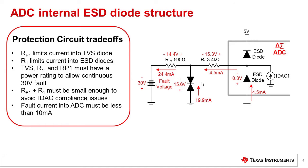In this slide, we zoom in on the key components attached to the IDAC pin to reiterate and clarify the protection circuit for the ADC. This example shows the final resistor and TVS values that we will use for this design. Note that the primary purpose of RP1 is to limit the current into the TVS diode to prevent damage to the TVS. Note that the TVS shunts the majority of the fault current to ground and limits the voltage applied to R1 and the ADC. R1 limits the current flowing into the ADC's internal ESD protection diode to less than the absolute maximum 10 milliamp limit. Power dissipation will be a factor when selecting the resistors and TVS diode. Also, choosing resistors that are small enough to keep the IDAC compliance voltage in the specified range is another factor.